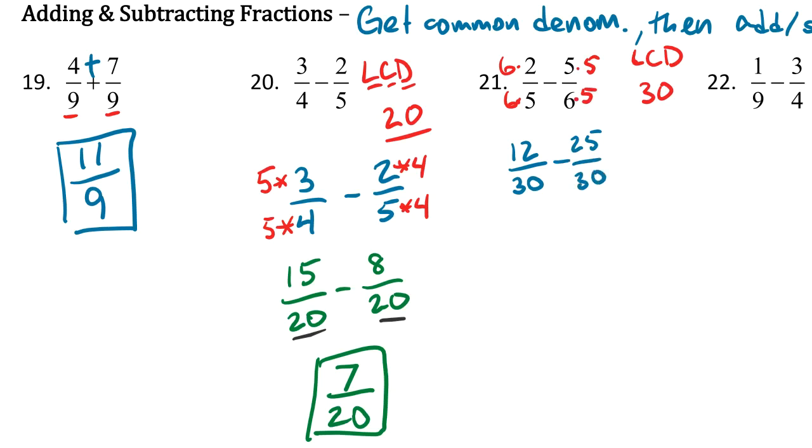Now all we've got to do is that subtraction. So 12 minus 25, that's going to get us negative 13. And then it's still going to be over 30. That doesn't reduce or anything like that, so we are done. Negative 13 over 30 is our answer.